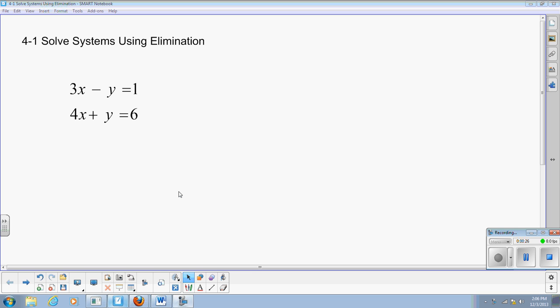Then we'll have just one variable to work with. We'll solve for that one variable, take our answer, put it back into one of the original equations, solve for the second variable. So now to show you how all that works, here's a system here: 3x minus y equals 1, and 4x plus y equals 6.